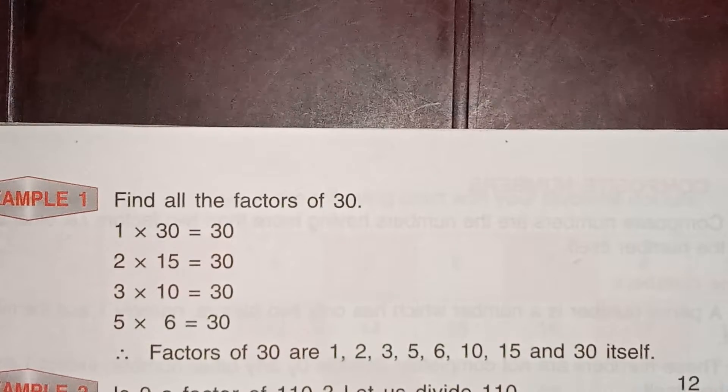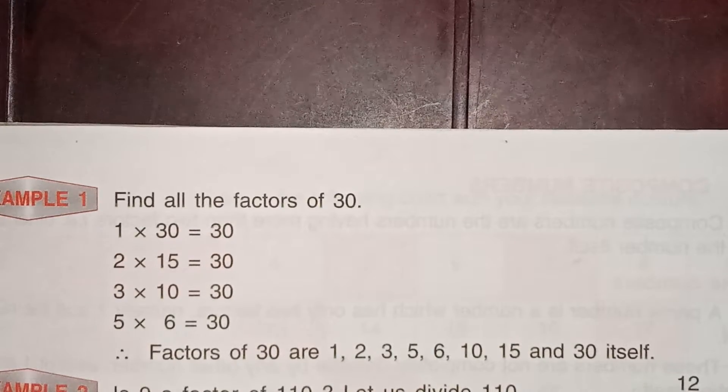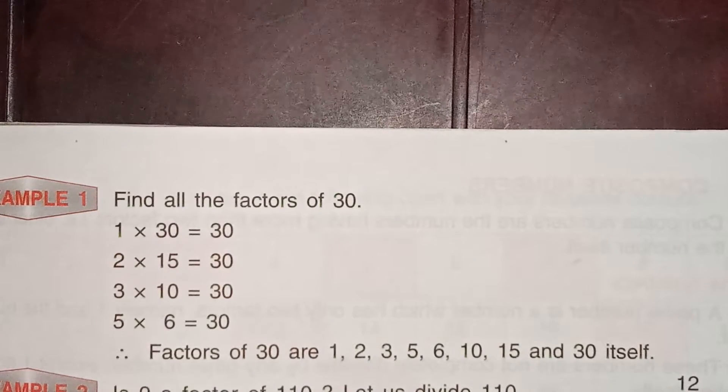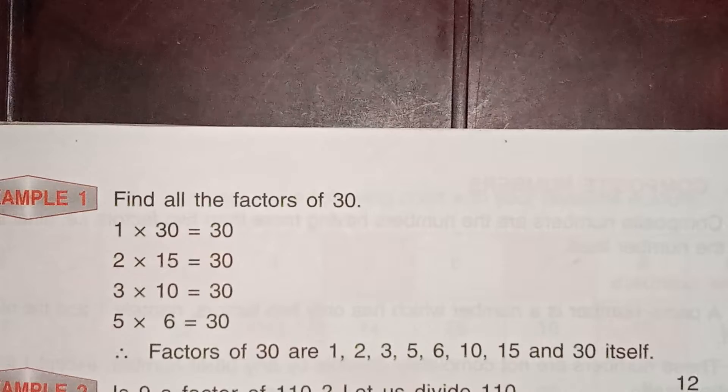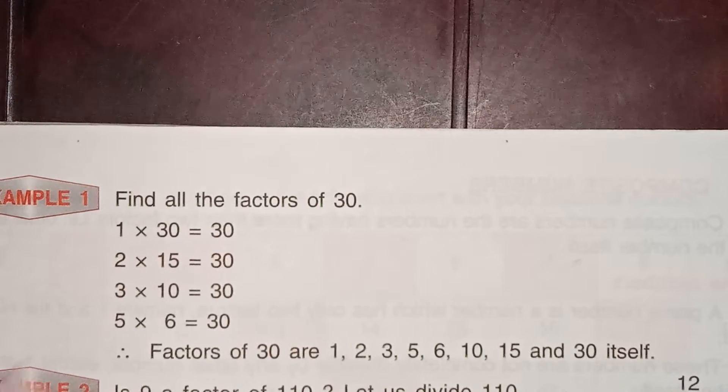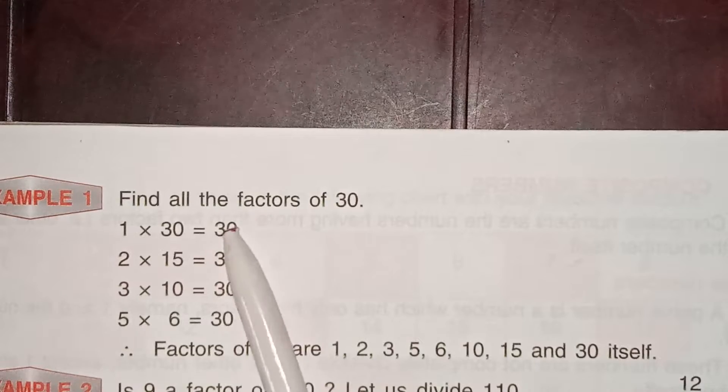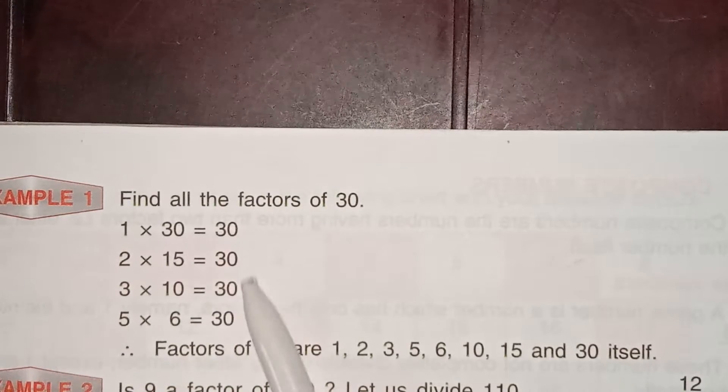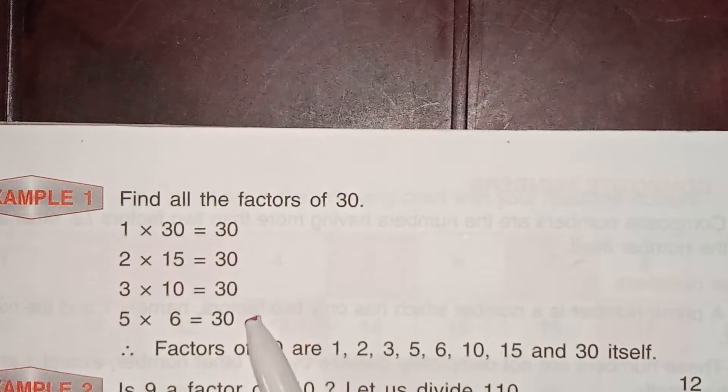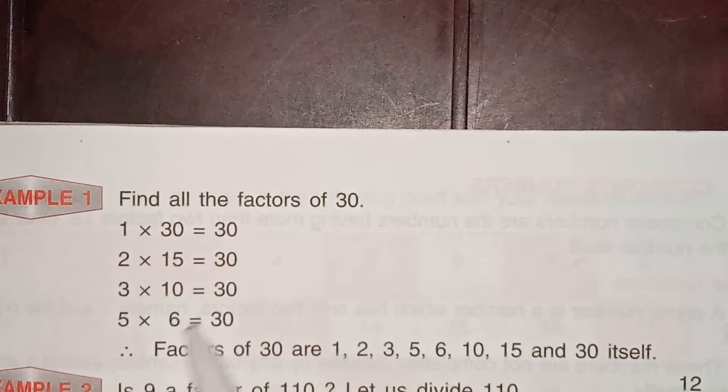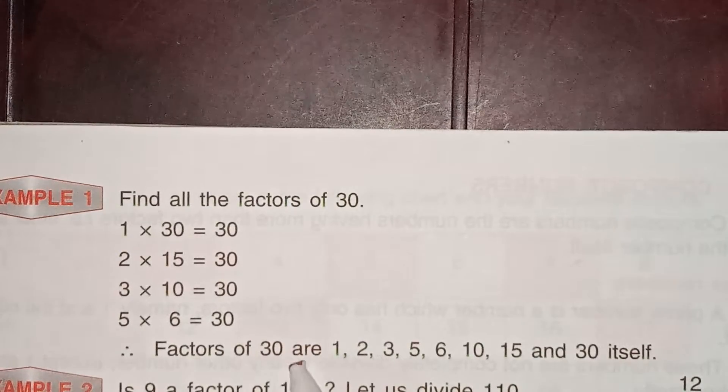Factors of a given number are generally represented with the capital letter F. To find all the factors of a given number, here one example is given to find all the factors of 30. First we write all the pairs of numbers whose product is the given number. Using this method we can find the factors of any number.